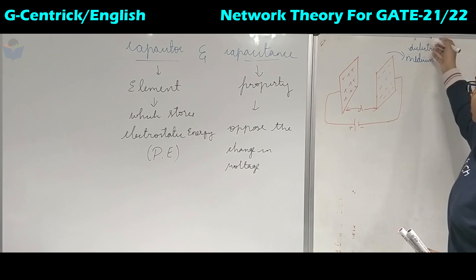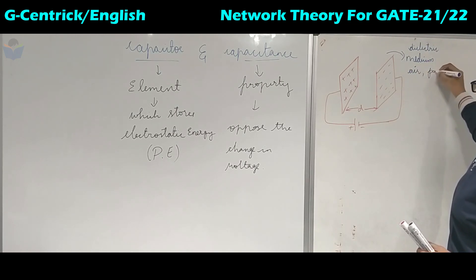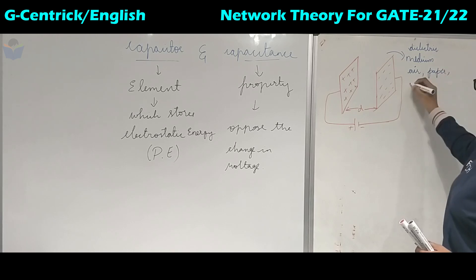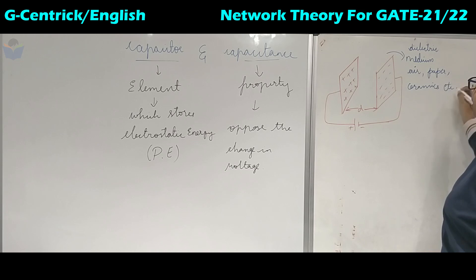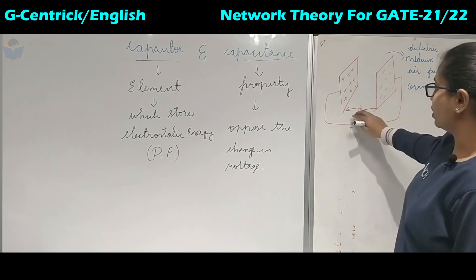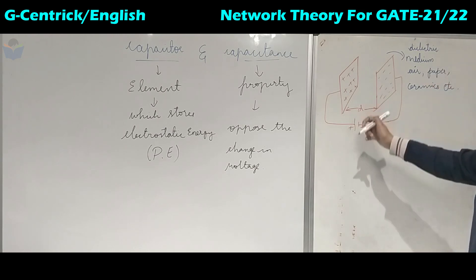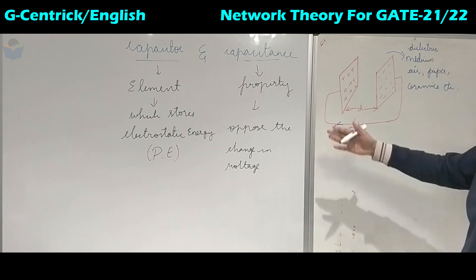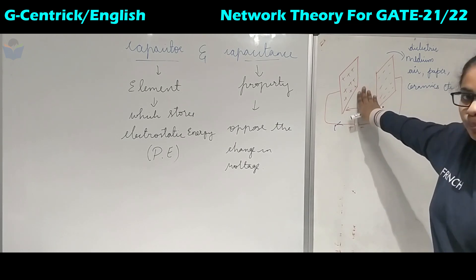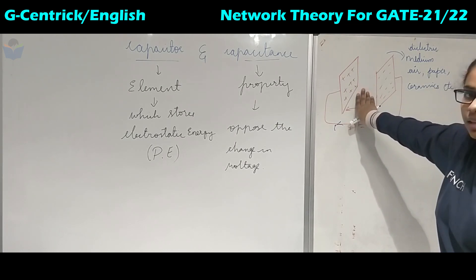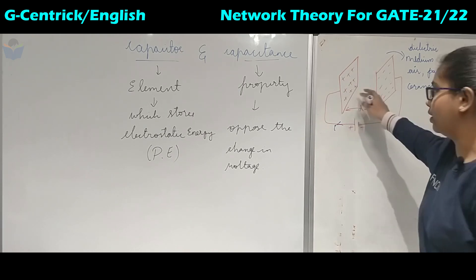This dielectric can either be air, paper, ceramics, etc. These are some of the dielectrics, and the plates are separated by distance d. This has a positive terminal and a negative terminal where the current leaves from the positive terminal.